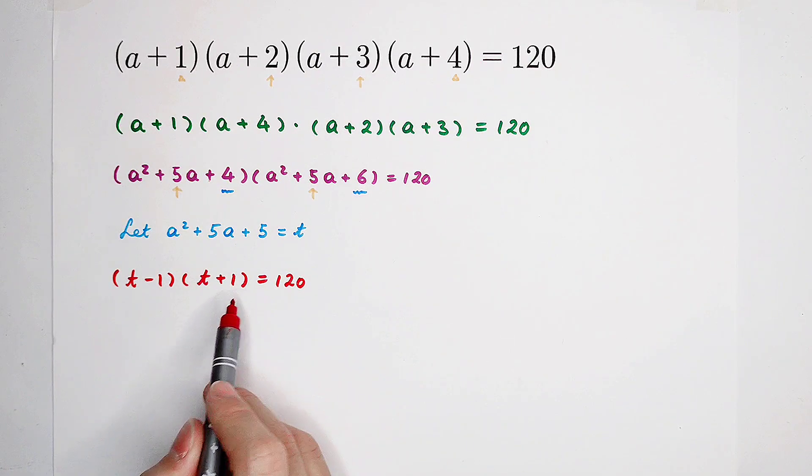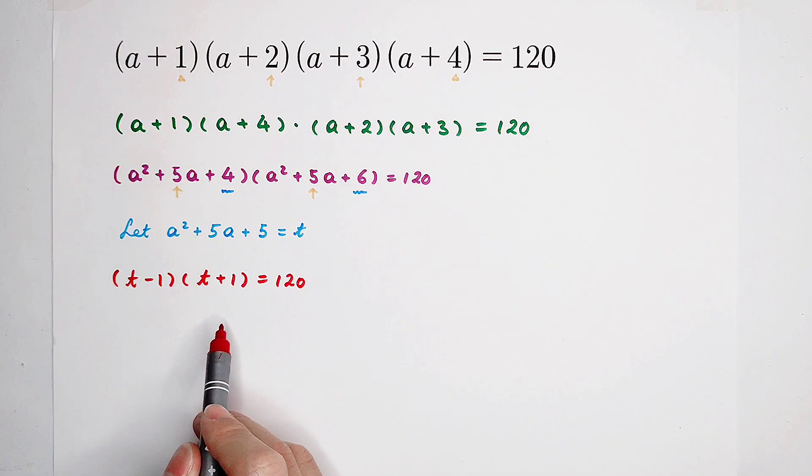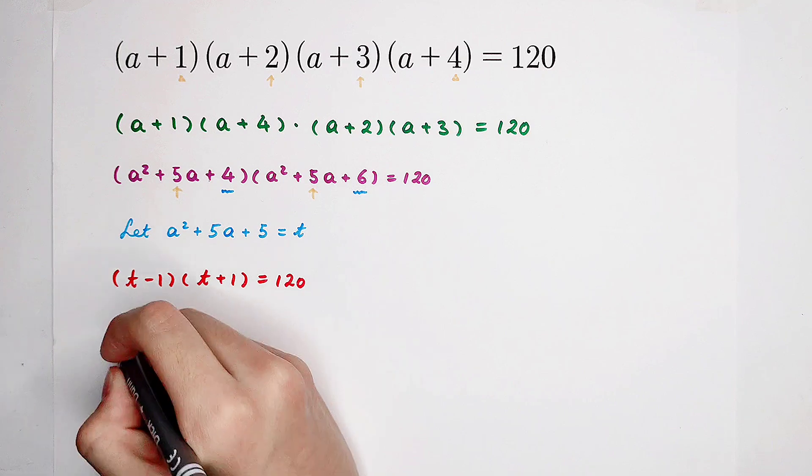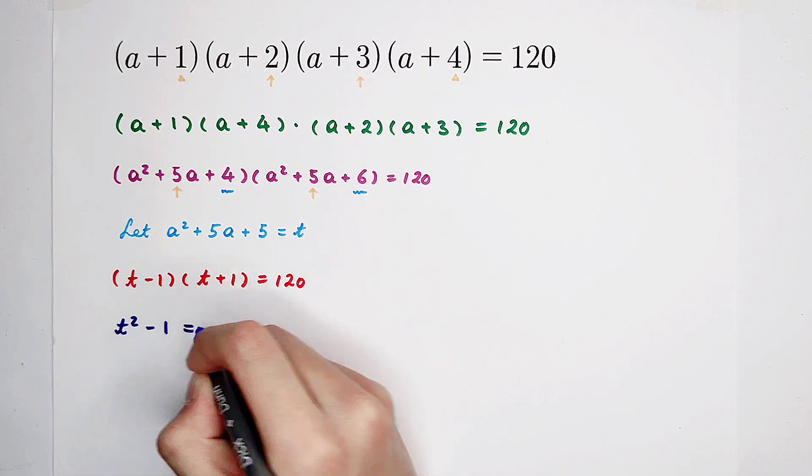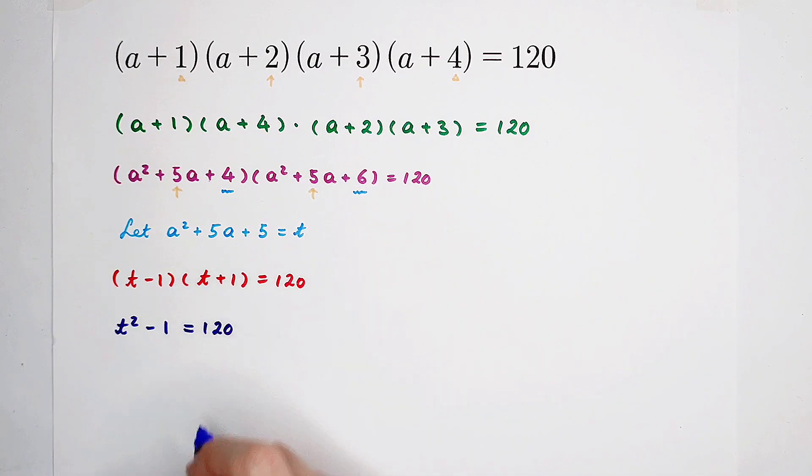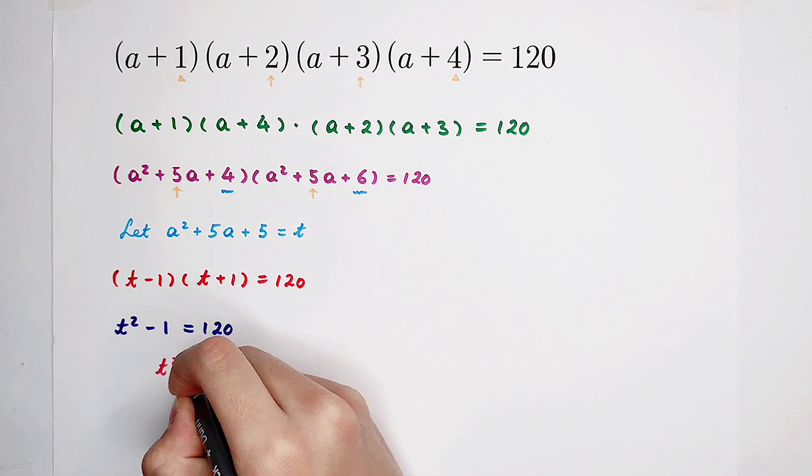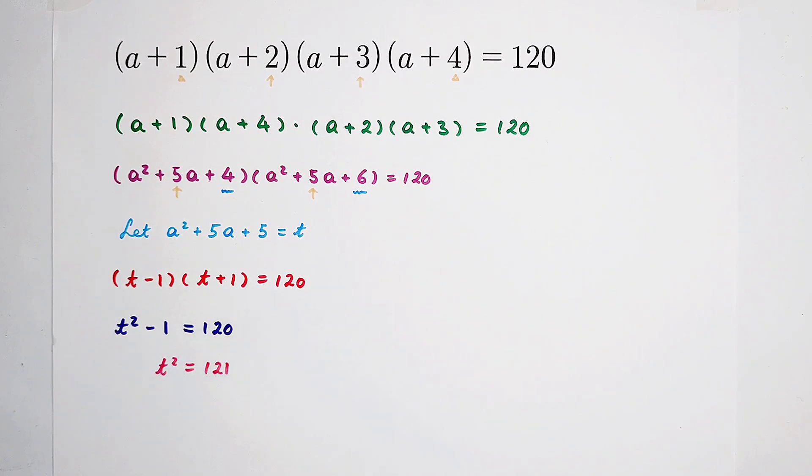The left side is the product of t minus 1 and t plus 1. Of course, binomial formula: t squared minus 1 equals 120. t squared is 121. We get t equals positive or negative 11.